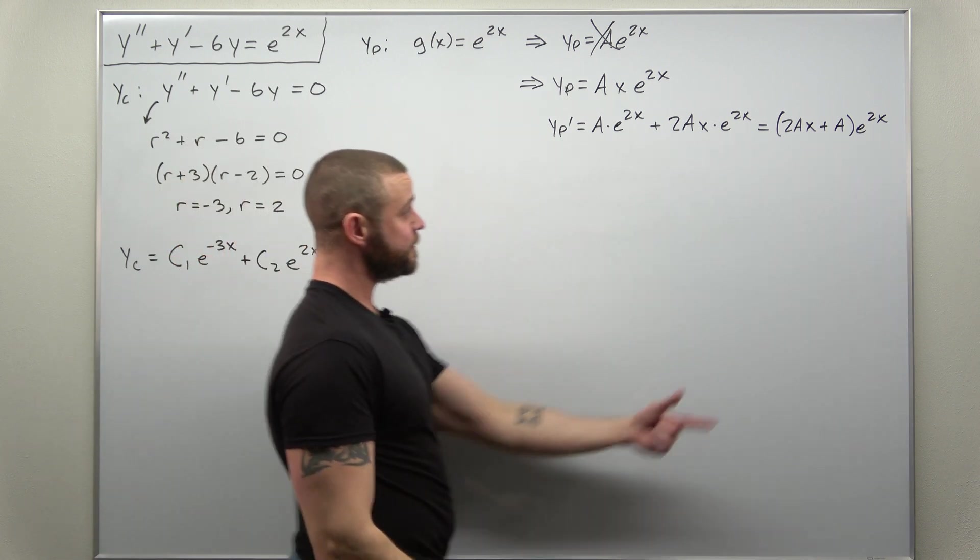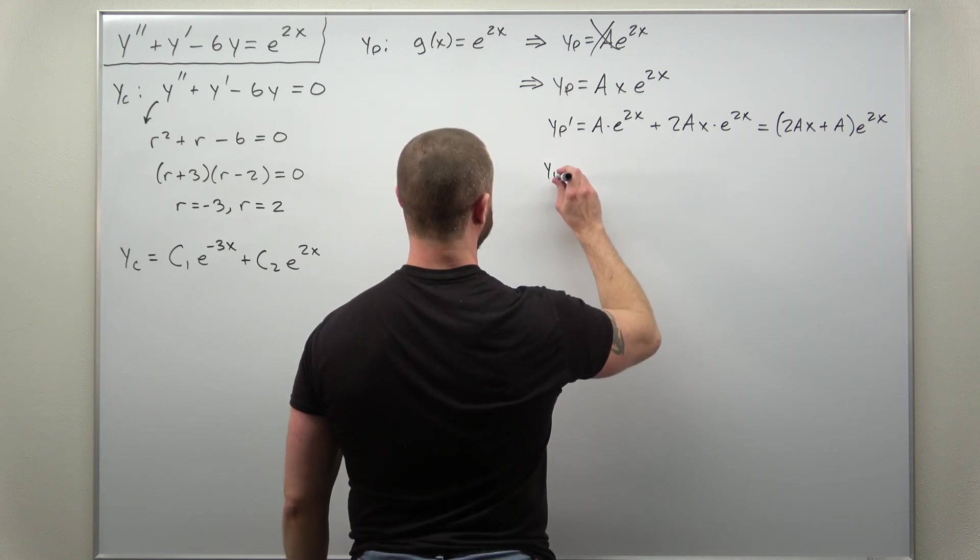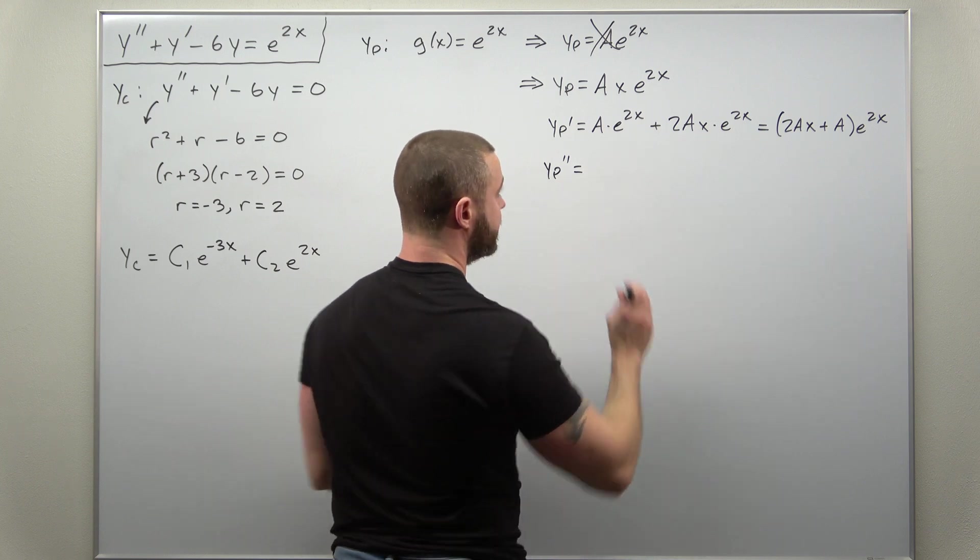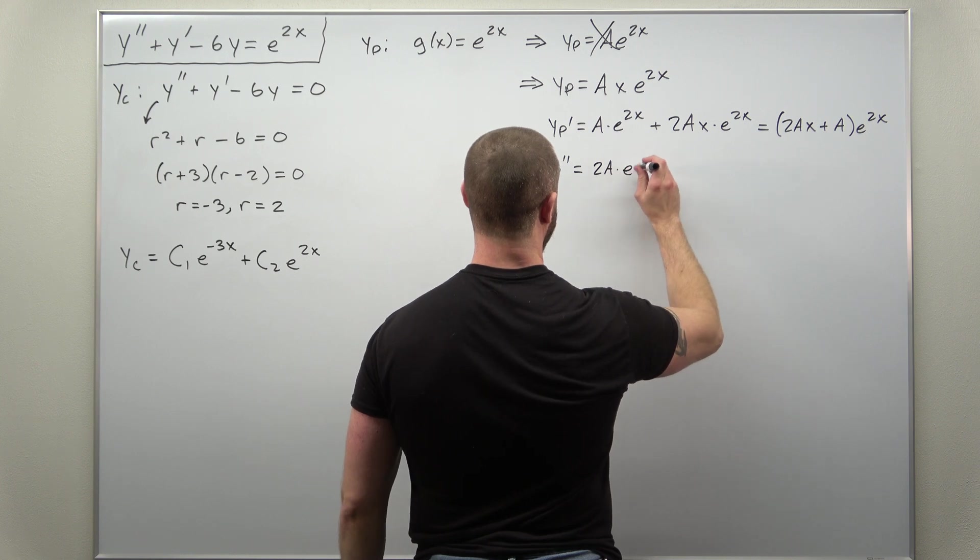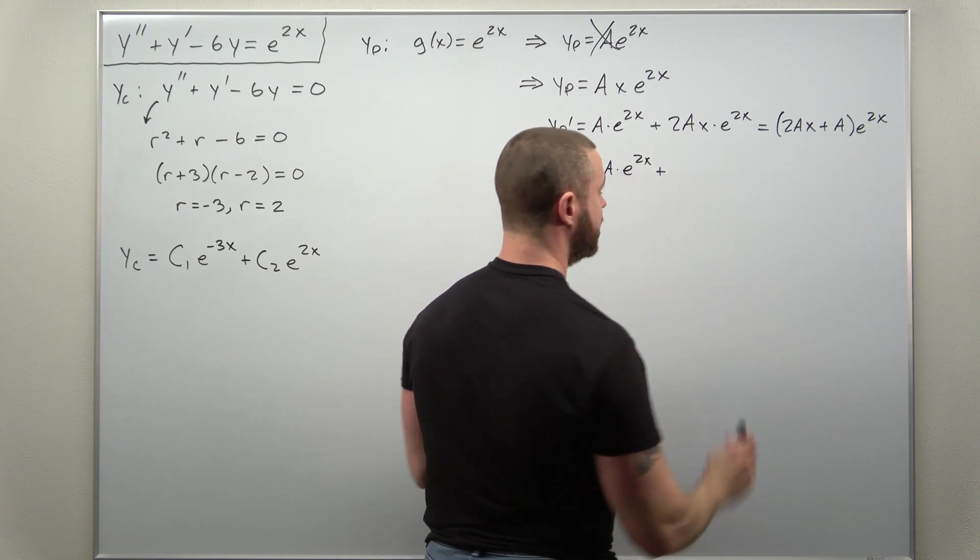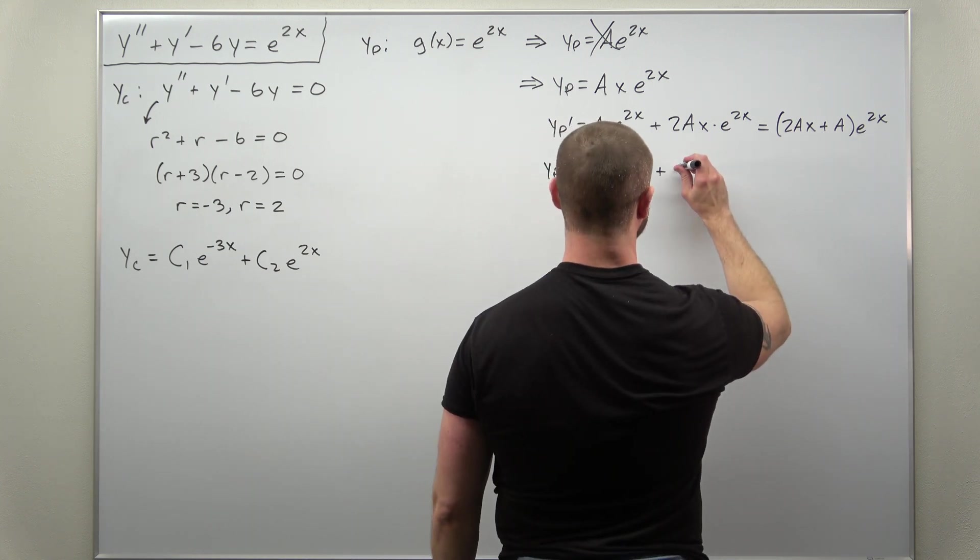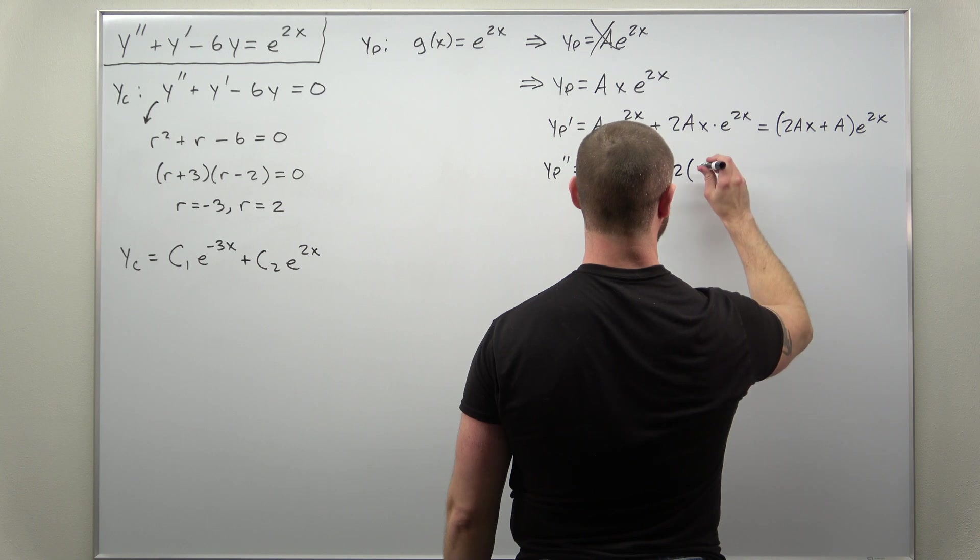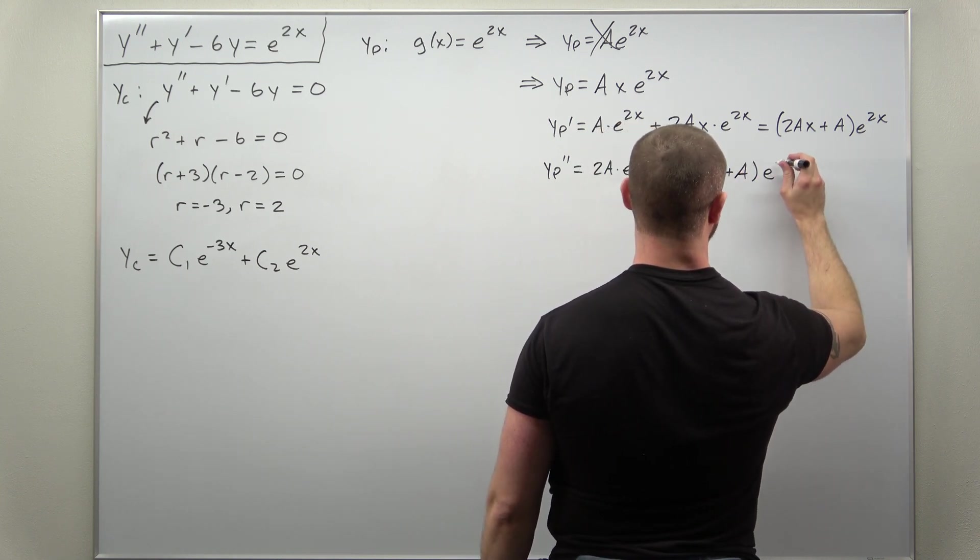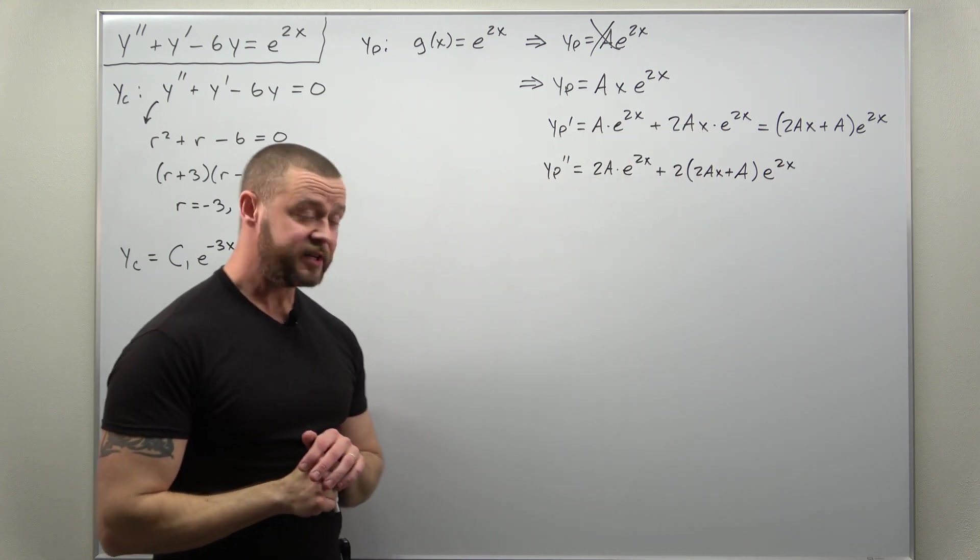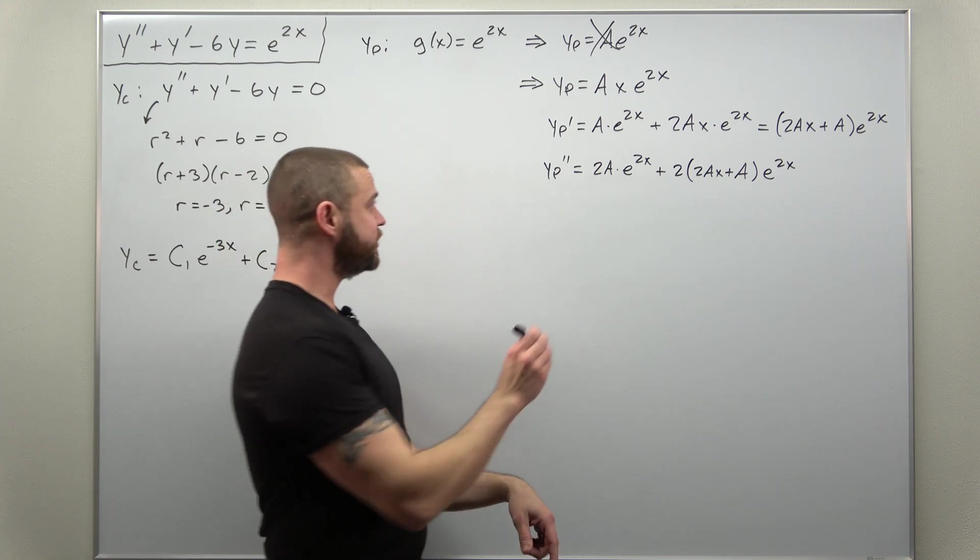And we're going to go ahead and differentiate this again using product and chain rules. So differentiate the first part, looks like we get 2Ae^(2x). And when you differentiate the second function, you'll get another factor of 2. So 2(2Ax + A)e^(2x).